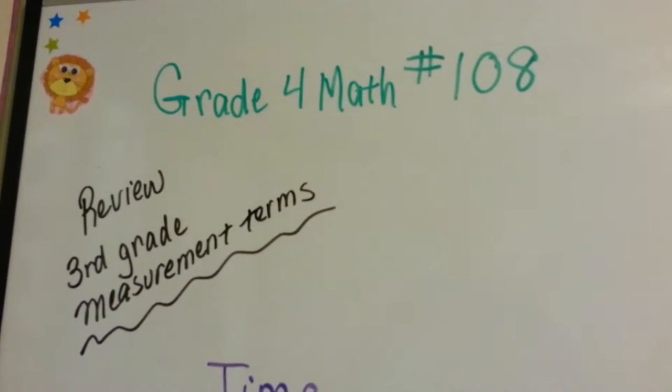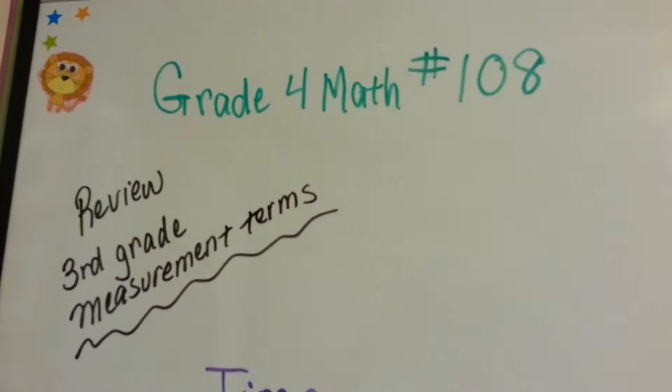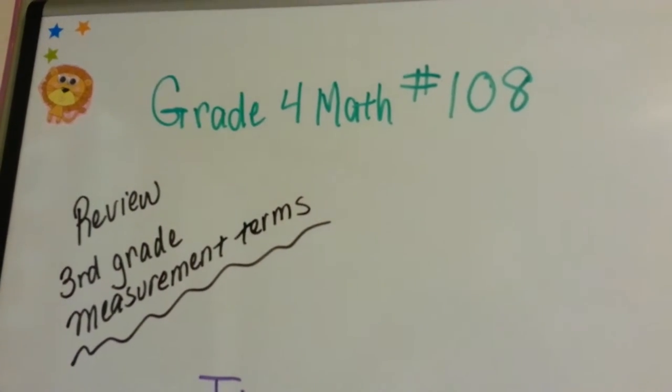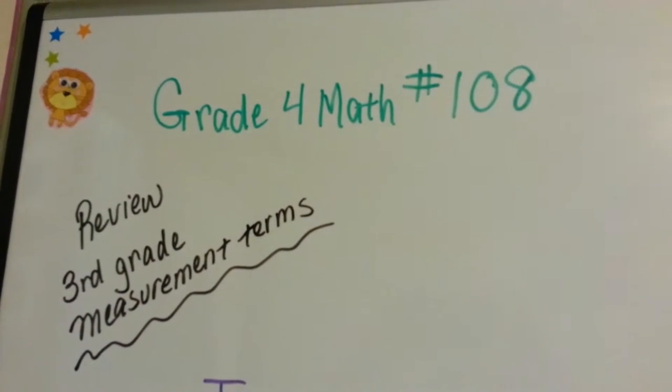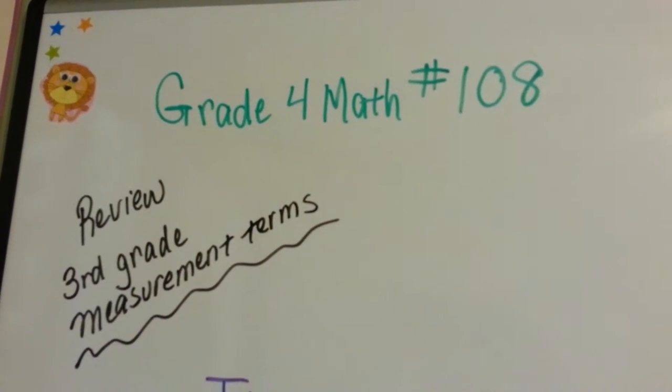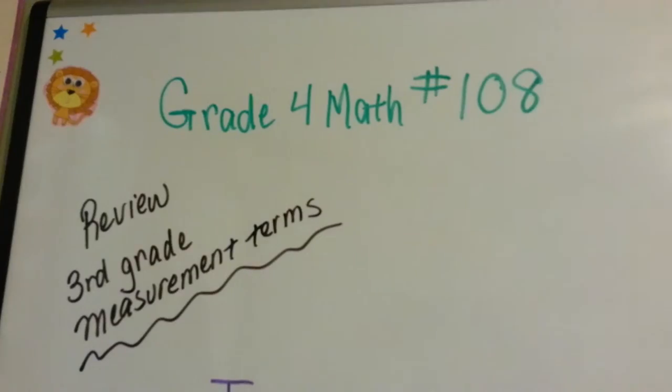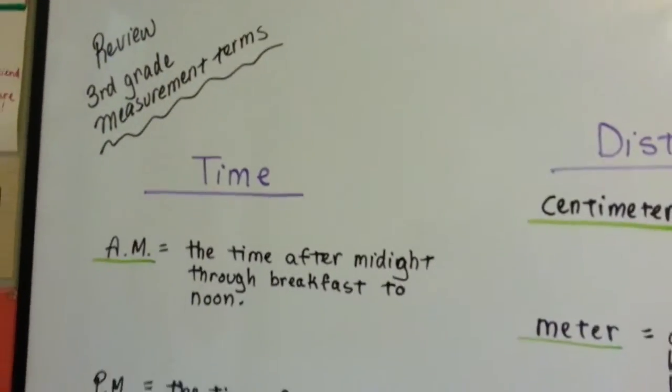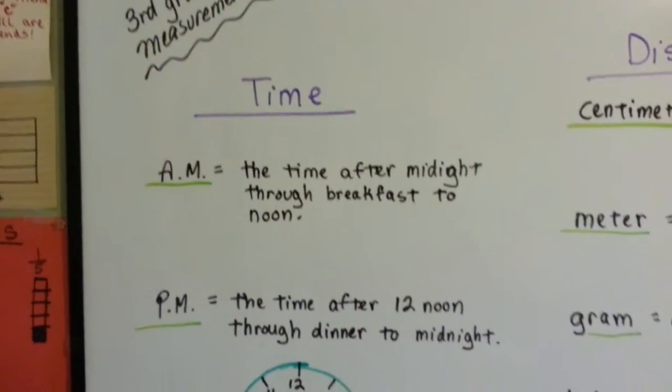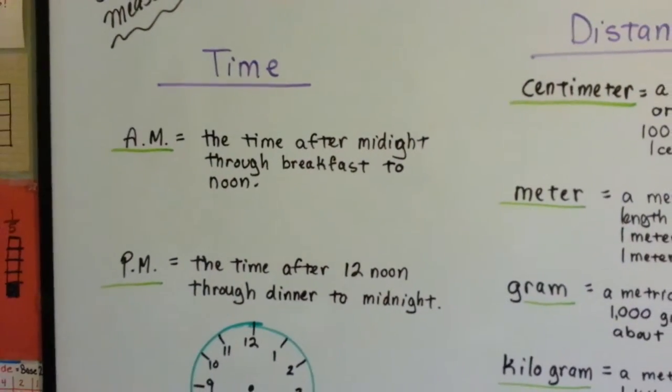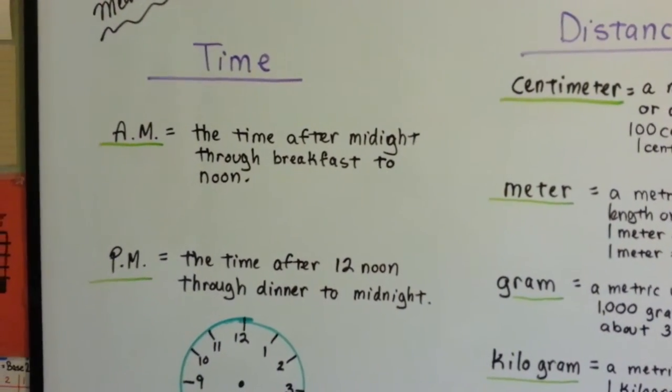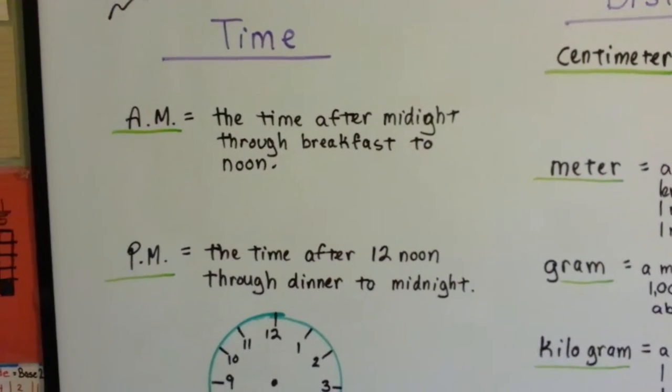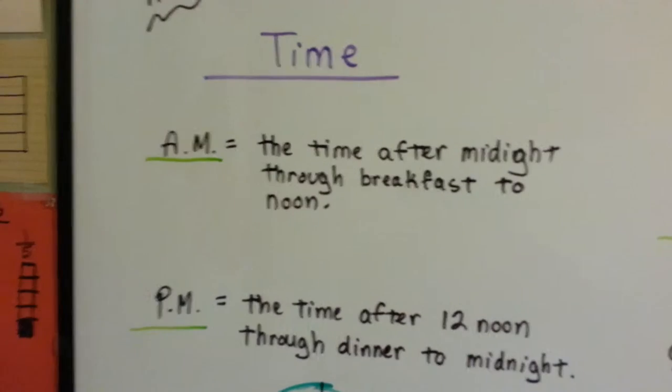Grade 4 math, number 108. This is a review of third grade measurement terms before we go on to the fourth grade measurement. I want to make sure that the kids are caught up and aren't going to lag behind. If any of the kids have trouble with any of this, they should go back to the third grade sections for time and length and distance or mass and study it again to remember it, otherwise they'll get lost.